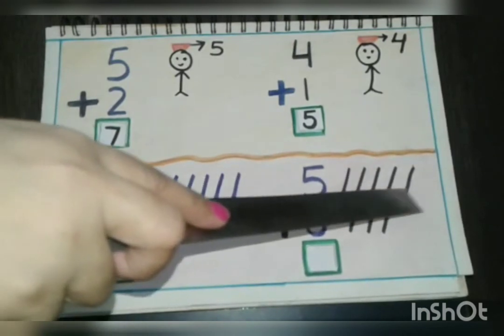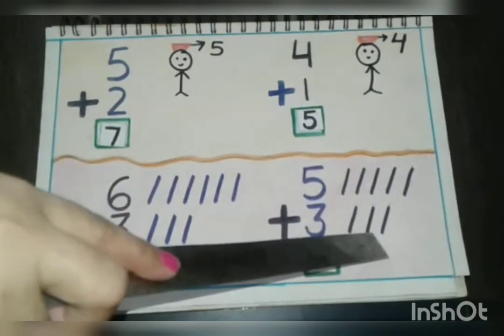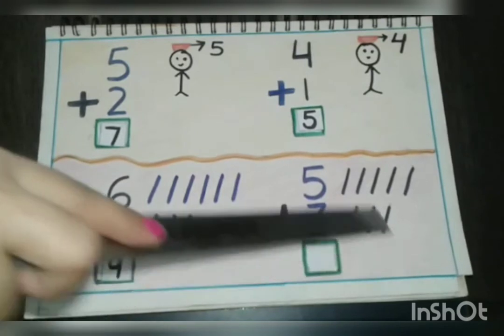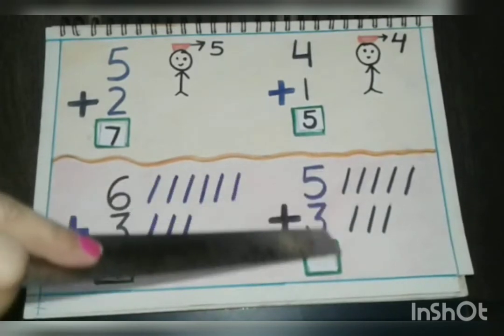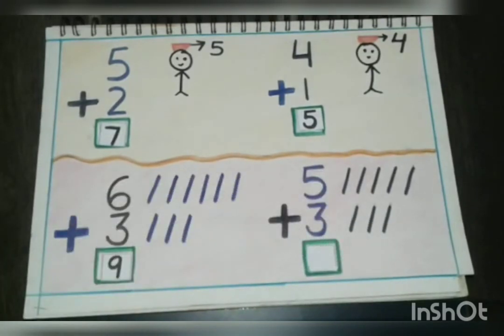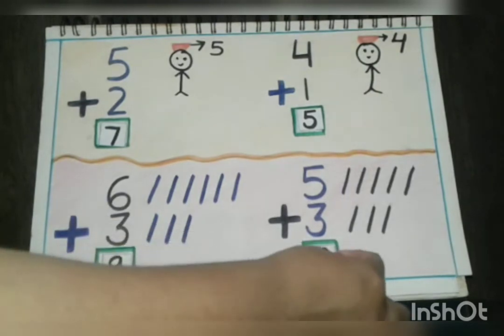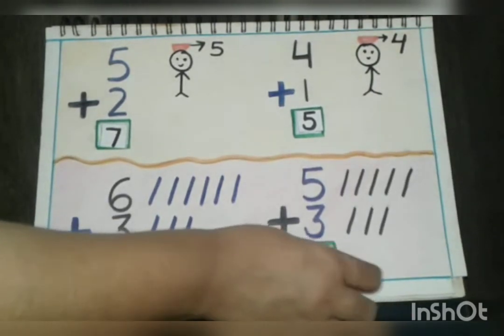One, two, three, four, five, six, seven, eight. So after adding these two numbers, we get the answer eight. Very good children.